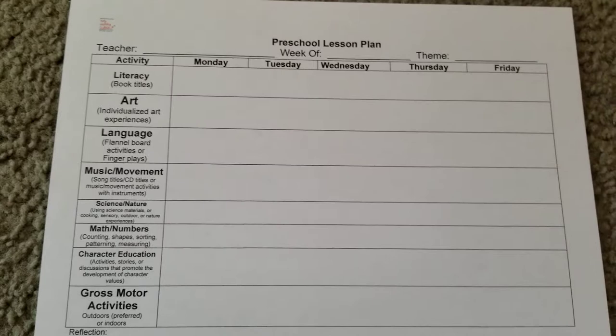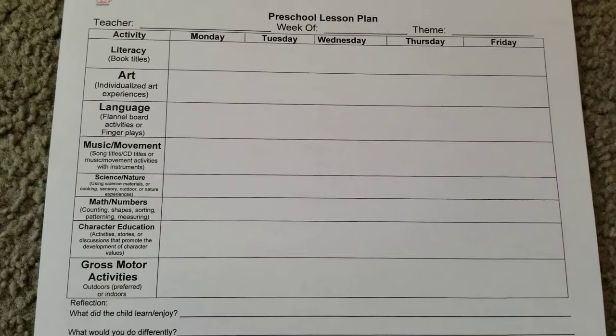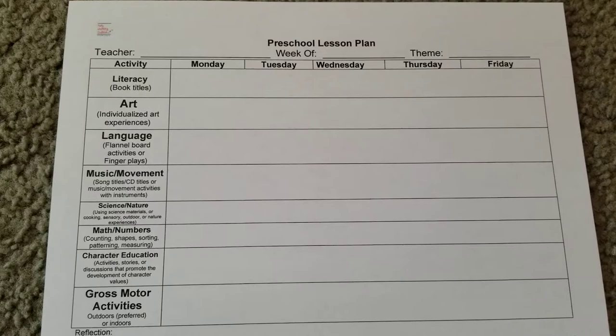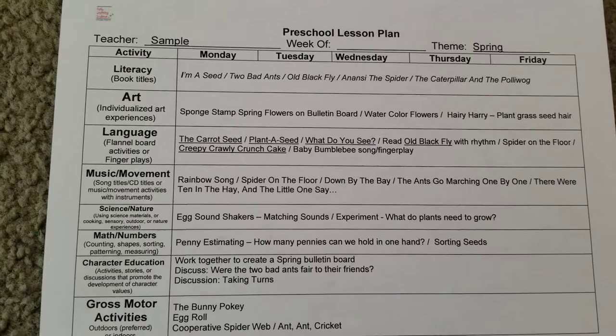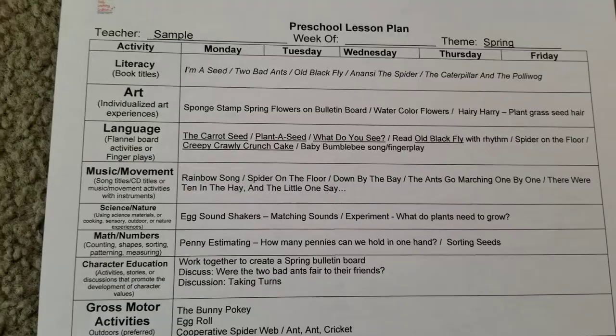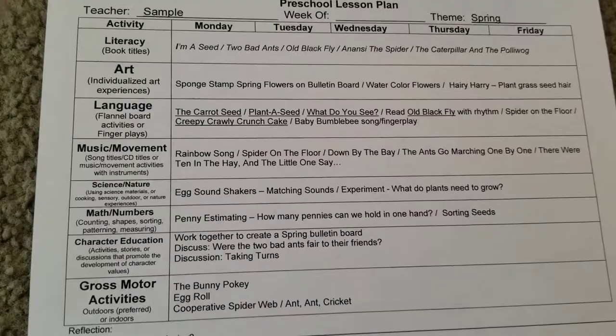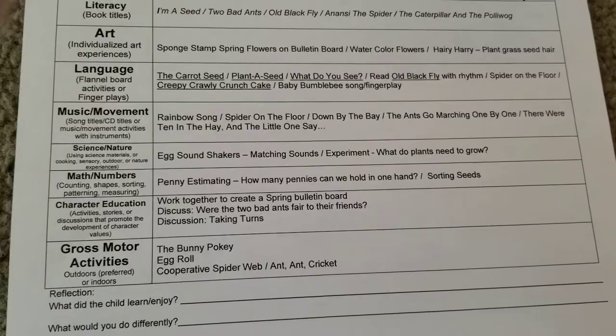Now let's come over to our older group — a preschool lesson plan. Here's a blank one, and if you notice, you don't have the same blocks that you had in the other lesson plan. You can actually write out what you want to do for your plans. It's very similar in terms of your subject area or activity. Here is one that is written out; we're still sticking to themes, and up here there's spring. You can see how it's written across the week — you may have a book you read each week and you can write all those things in.